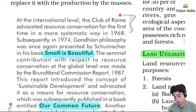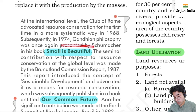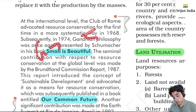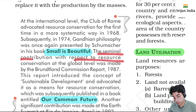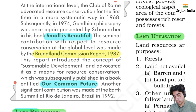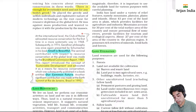In 1974, Gandhian philosophy was presented again by Schumacher in his book 'Small is Beautiful' - minimalism, the simpler things are, the easier life is. Einstein also said anyone can complicate things; the genius simplifies them. The seminal contribution to resource conservation at the global level was the Brundtland Commission Report 1987 - very important. This report introduced the concept of sustainable development and advocated means of resource conservation, subsequently published in a book called 'Our Common Future.' Another significant contribution was the Earth Summit, Rio de Janeiro, Brazil, 1992.